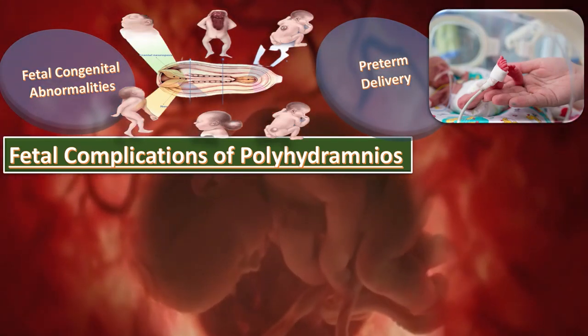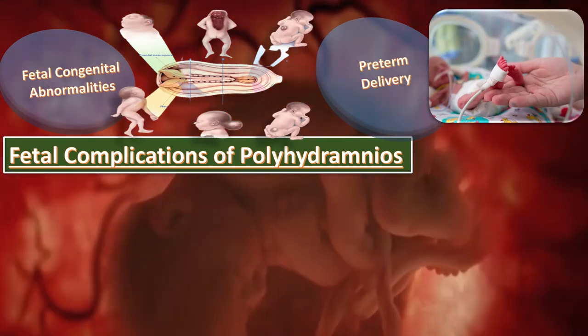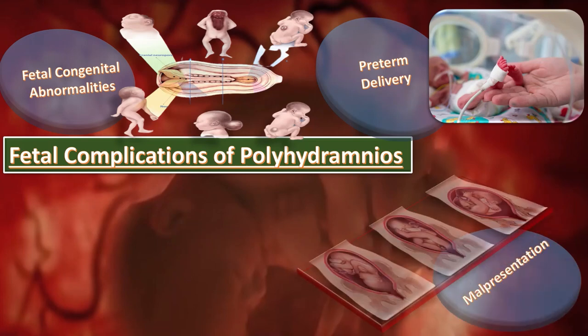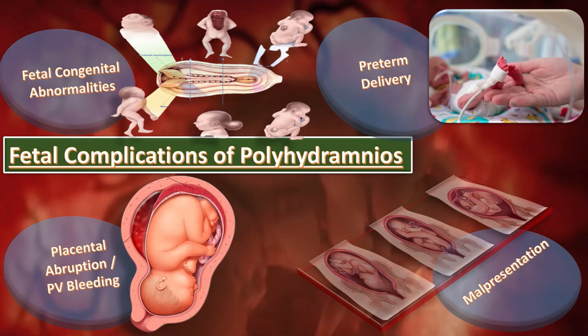The underlying cause may include congenital anomaly and maternal diabetes. The third fetal complication is malpresentation — for example, transverse lie, breech presentation, etc. — which is more likely with polyhydramnios as the fetus has more room to move within the uterine cavity. The fourth fetal complication is placental abruption and unexpected PV bleeding, which occurs with polyhydramnios due to mechanical pressure exerted by amniotic fluid causing premature separation of the placenta.